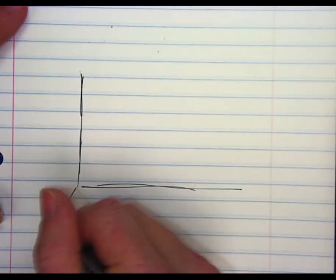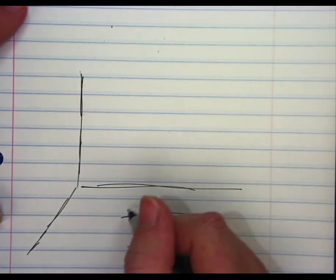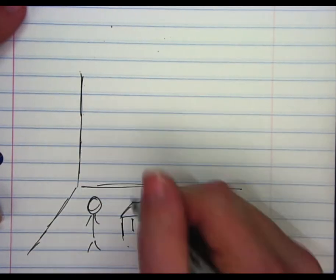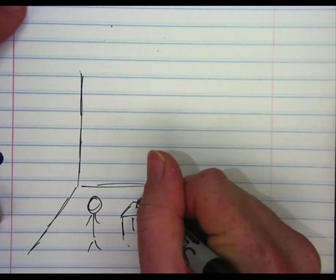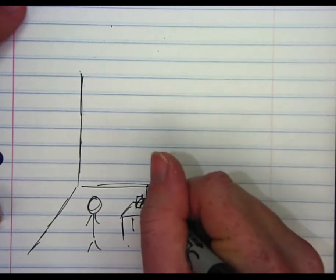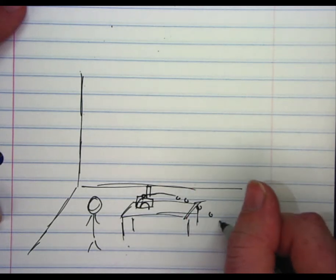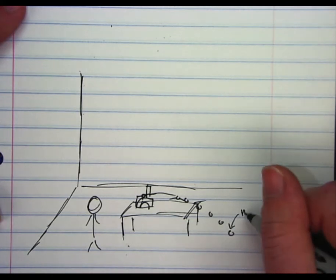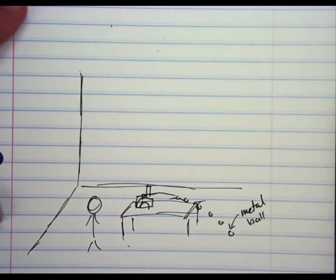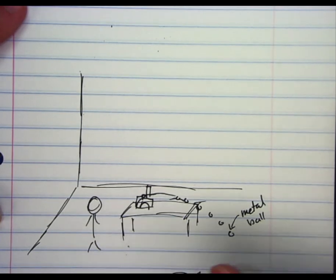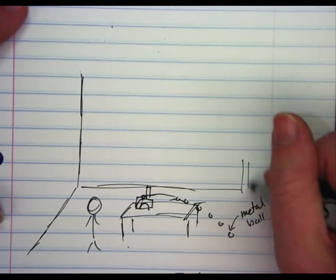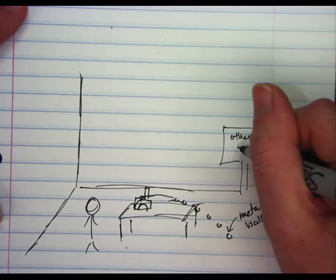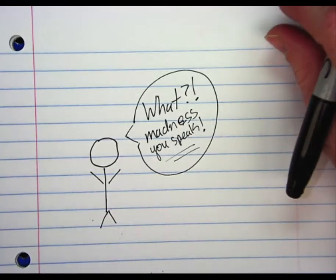We also wanted to solve for the initial velocity in a different way using vertical displacement and horizontal displacement. We're going to shoot the ball across the lab — it will fall a specific height and travel a specific distance. Yes, we are going to shoot metal balls across the lab.